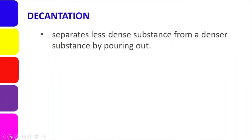So what is decantation? What is its technical definition? According to the module, it separates a less dense substance from a denser substance by pouring out. What do less dense and denser mean? It is about density — how much material is packed inside a substance. Technically, we are talking about the number of molecules. The substance with more molecules is more compact and heavier. The one with fewer molecules is either less solid or lighter. So decantation separates the lighter, less compact substance from the denser, more compact one.